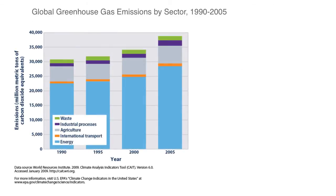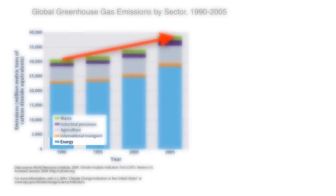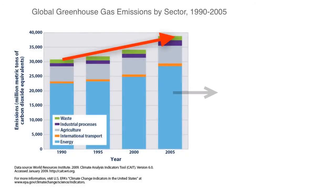You can see in this graph that the global greenhouse gas emissions continue to rise, with energy being the largest proportion. Again, this trend is directly related to the fact that 65% of the global energy resource is fossil fuels.